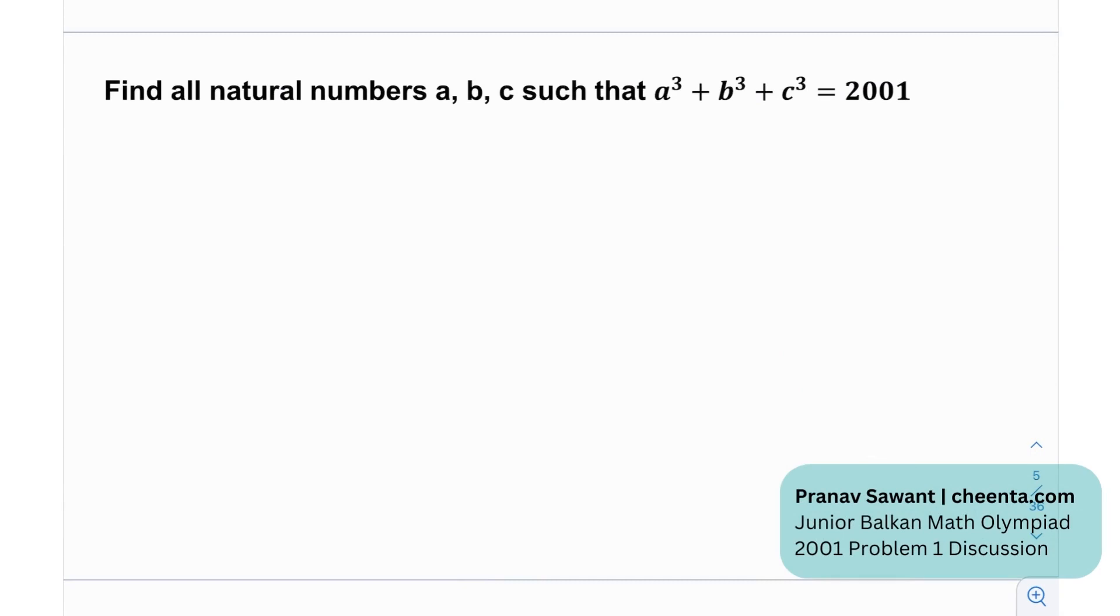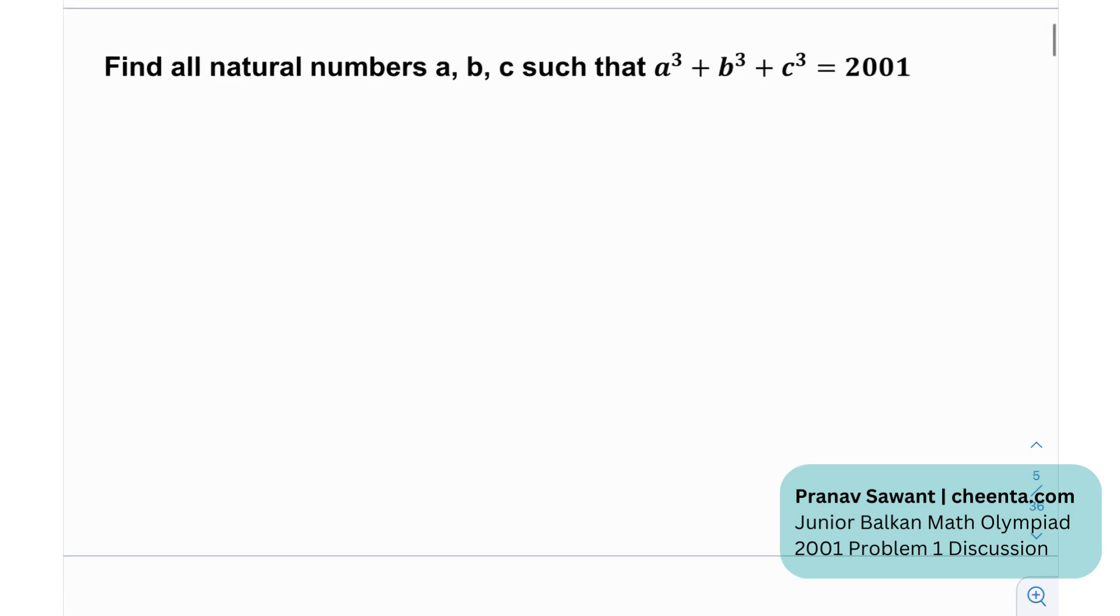We need to find all natural numbers A, B, C, such that A³ + B³ + C³ = 2001. Now, you might have seen this problem before, but we're going to try and solve it in the most efficient way possible, because there are a lot of ways to do this. We're going to try and use as many number theory toolkits that we might have in order to get through this.